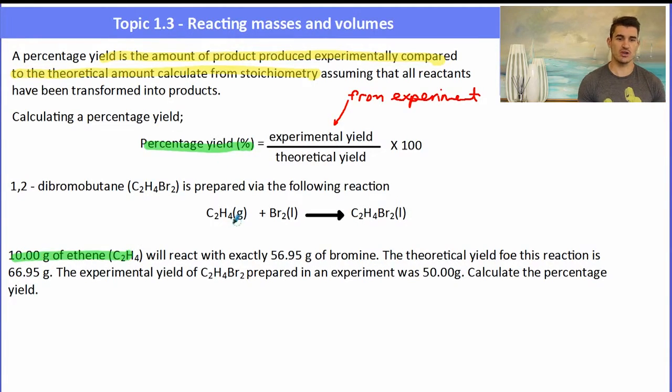For instance, if we have 10 grams of ethene and we react it with a whole bunch of bromine, we can work out that the theoretical yield was 66.95 grams using the stoichiometry. The experimental yield, however, was only 50 grams, so we got less than what we expected. The percentage yield for this experiment is how much we produced, 50 grams, divided by the theoretical amount that was possible if all of the reactants turned into products.